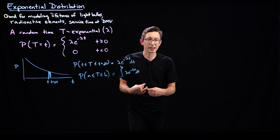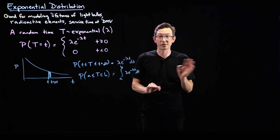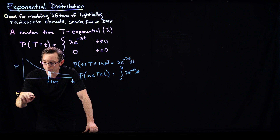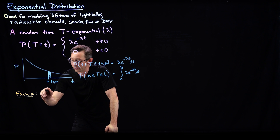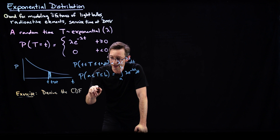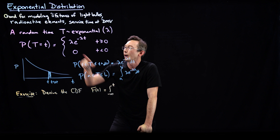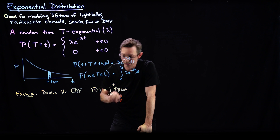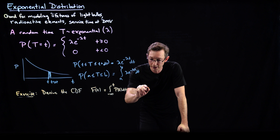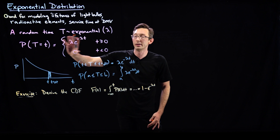I'm going to write down a couple of exercises for you to do, because you'll get a lot more use out of this if you pause and work through them. Exercise one: derive the cumulative distribution function F(t), which is the integral from negative infinity to t of your probability density function p(t) dt. The answer is 1 minus e to the minus lambda t — I want you to derive this expression from the PDF.